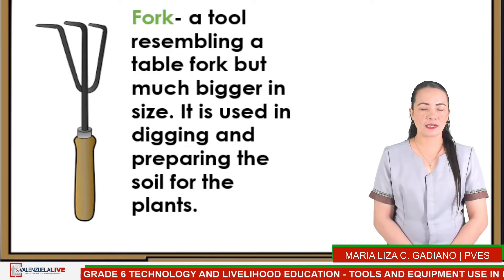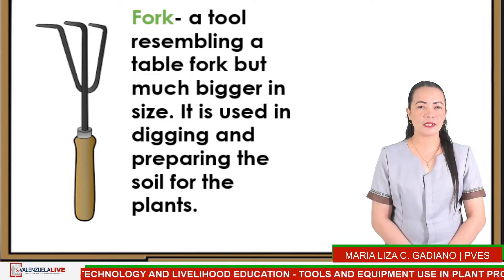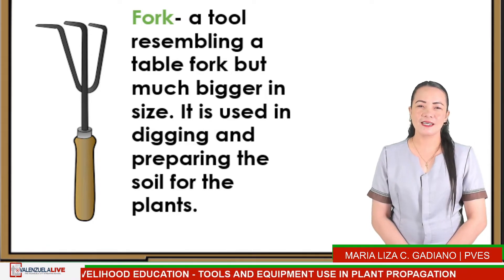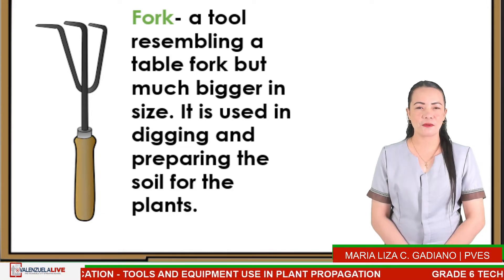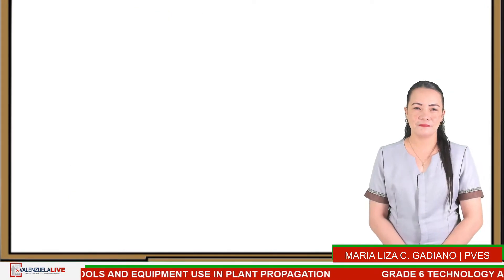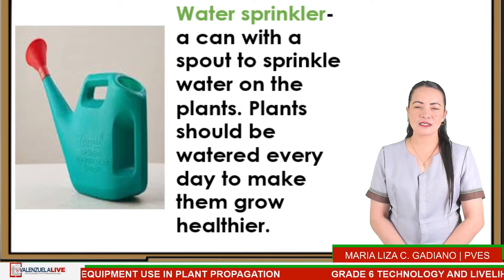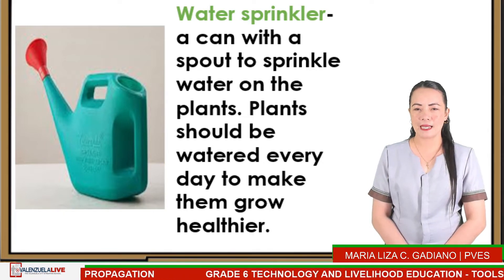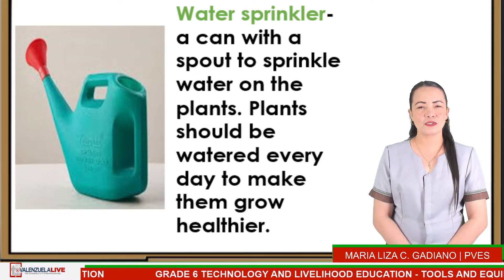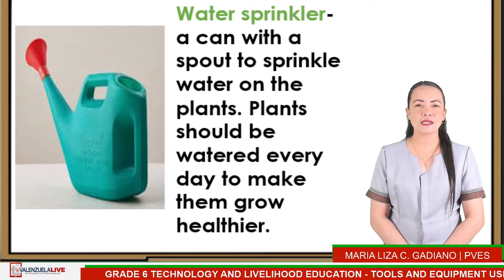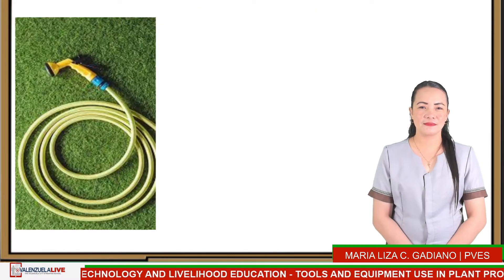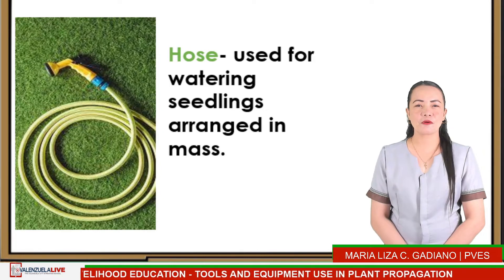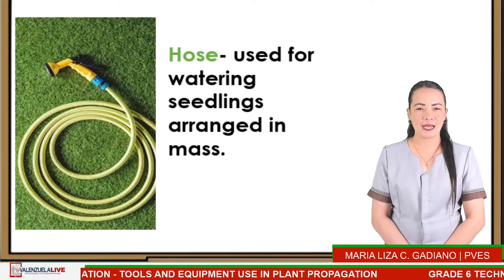Next is FORK — a tool resembling a table fork but much bigger in size, used in digging and preparing the soil for the plants. Next is WATER SPRINKLER — a can with a spout to sprinkle water on the plants. Plants should be watered every day to make them grow healthier. And last is the HOSE, used for watering seedlings arranged in mass.